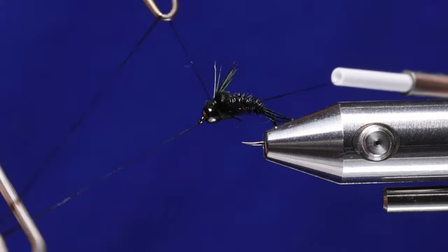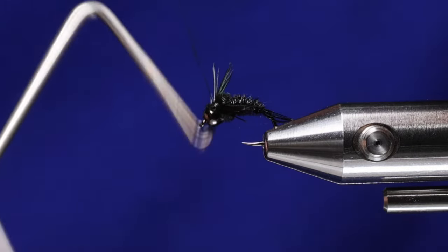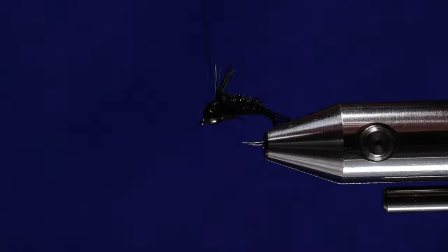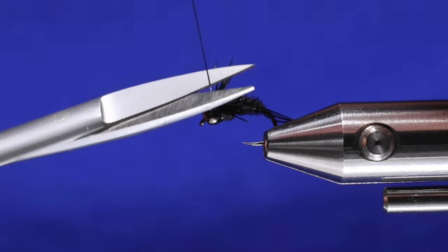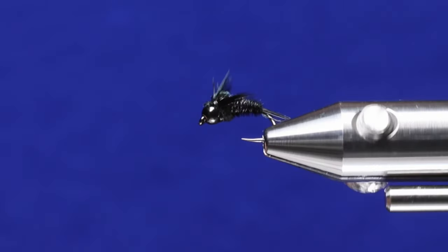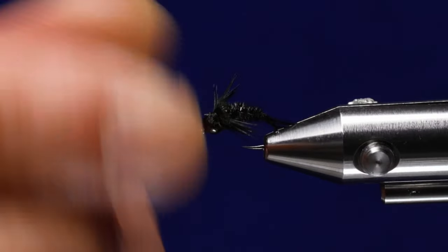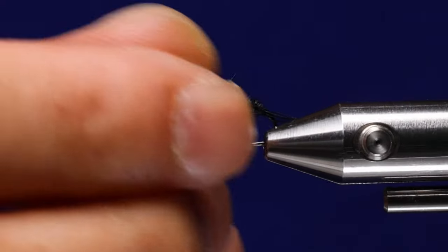Then from there what you're going to do is go in there and whip finish. I want to finish the whip finish up top. That way when we add the UV resin it'll also secure that knot. So at this point right here I want these legs to basically be pushed down slightly. So again I'm just going to wet them and pull them down.